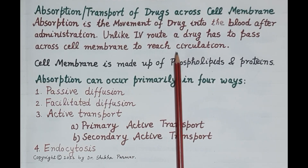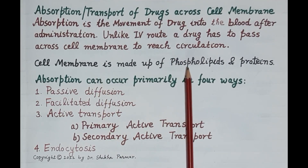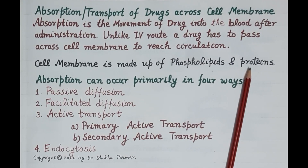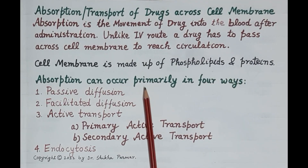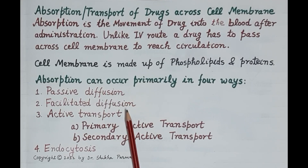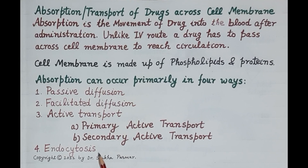The most important criteria for a drug to get absorbed is to pass through the cell membrane. The cell membrane is made up of a phospholipid bilayer, and proteins are embedded in between the phospholipid molecules. These proteins act as carriers or transporters of drugs. Absorption can occur primarily in four different ways: passive diffusion, facilitated diffusion, active transport — which is of two types, primary and secondary — and endocytosis.